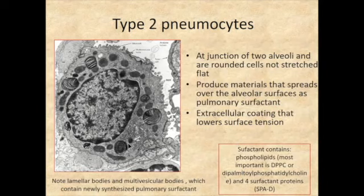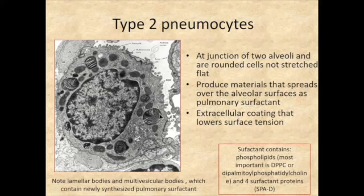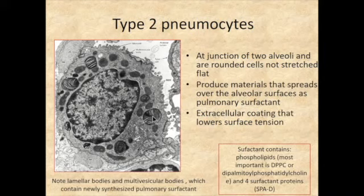Type 2 pneumocytes are harder to see on a histology slide, but when you look at an EM, they look really neat because they have structures called lamellar bodies — it almost looks like a layered shell or rock. They also have multivesicular bodies, which are a little smaller and different in appearance, and they actually join the lamellar bodies. This is where newly synthesized surfactant is located. So a type 2 pneumocyte is a cell in the respiratory system that secretes surfactant.